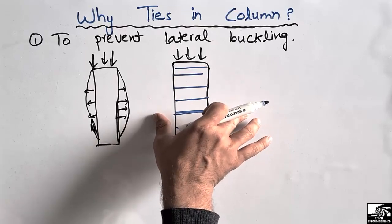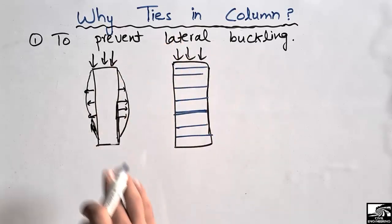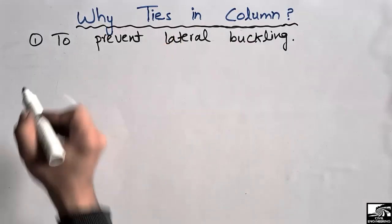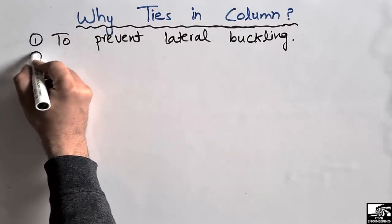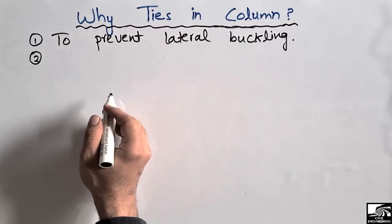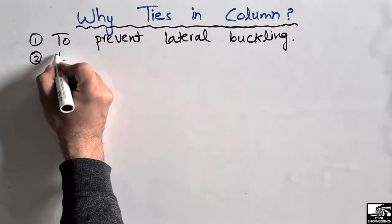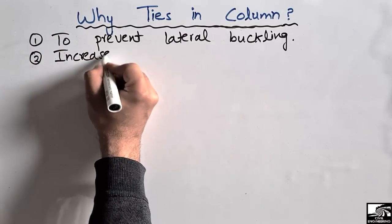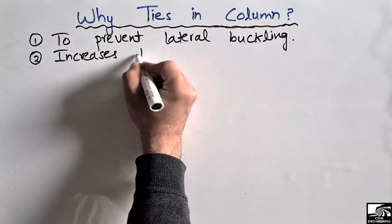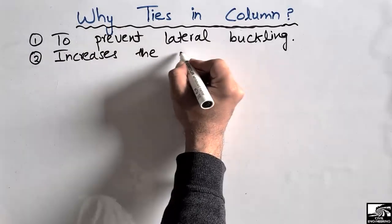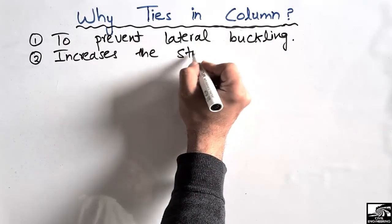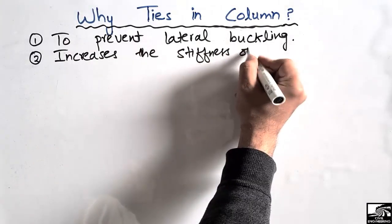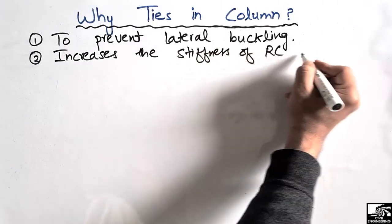The second reason for providing lateral ties in a column is that they increase the stiffness of the reinforced concrete column.